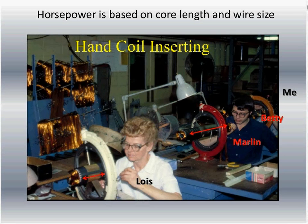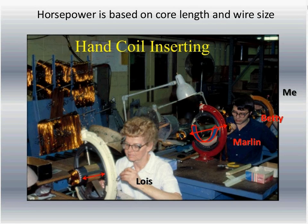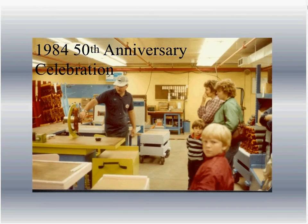That happens to be me. In 1984 we celebrated our 50th anniversary, so they cleaned everything up, painted it, and invited the public in. They put arrows on the floor to let people walk through, and asked certain people to stand at stations and explain what was going on — and of course, everybody knows how much I like to talk, so I'm standing at this station. The red circle shows the first station where we've got the core with just the mylar inserts in it. The second station is where we're inserting the main coil — remember the main coil goes in first.